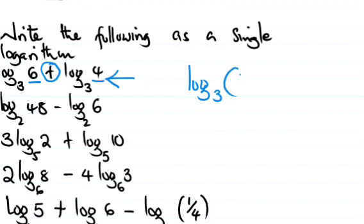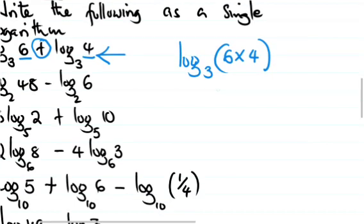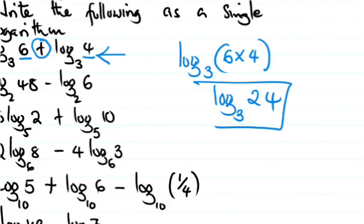We are going to write it as log base 3 of 6 times 4, which is log base 3 of 24. If you check on your calculator, log base 3 of 6 plus log base 3 of 4 gives the same answer as log base 3 of 24. As simple as that.